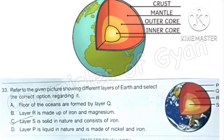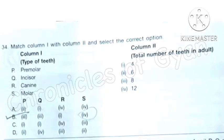Question 33: Refer to the given picture showing different layers of earth and select the correct option regarding it. Please check the image that I have added and you will find out P, Q, R and S. Correct answer is option C: Layer S is solid in nature and consists of iron. That means layer S is the inner core here.